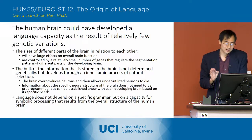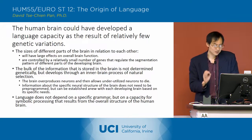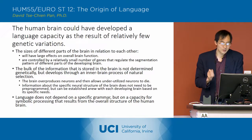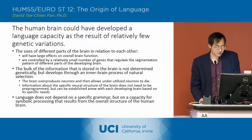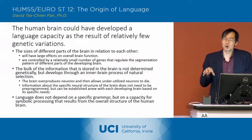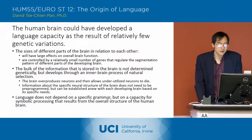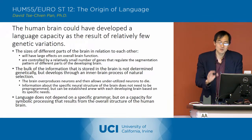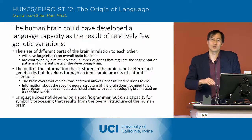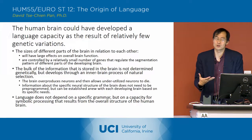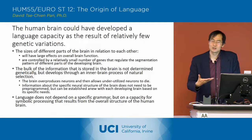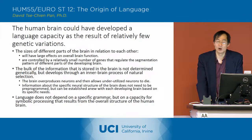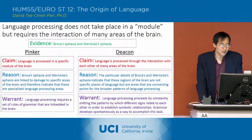Finally, he also indicates that language itself doesn't depend so much on a specific grammar, but on a general capacity for symbolic processing that results from the overall structure of the human brain. Those are the basic arguments he has for indicating that language capacity could have happened through natural selection via a relatively few number of changes in our genetic makeup.